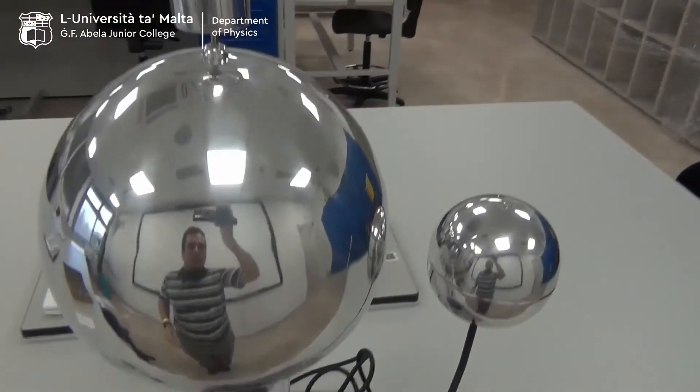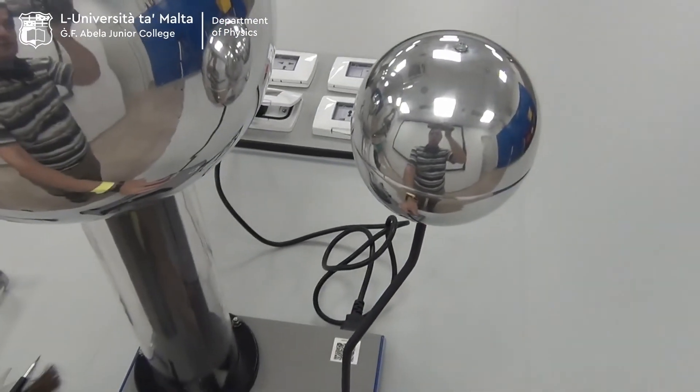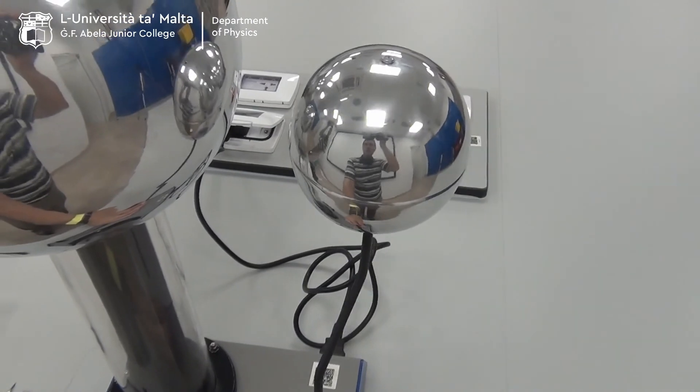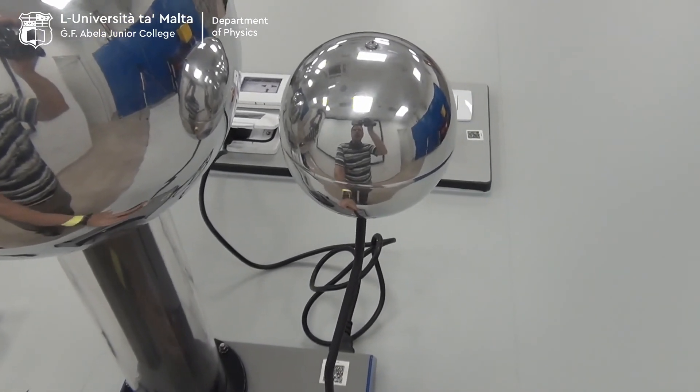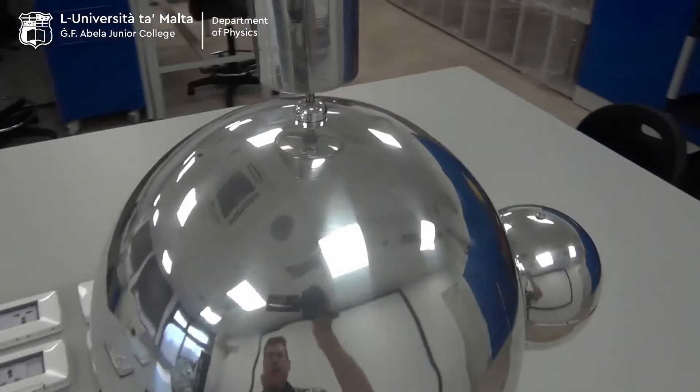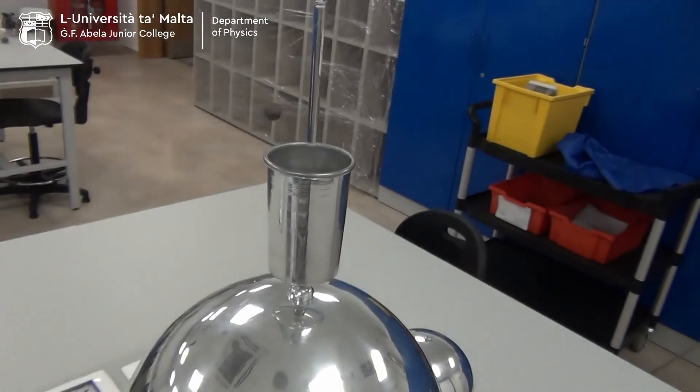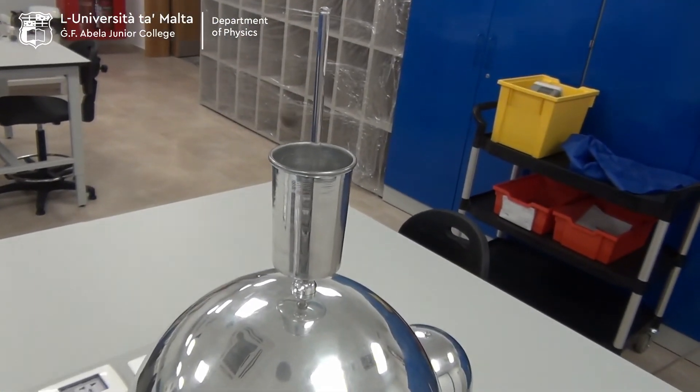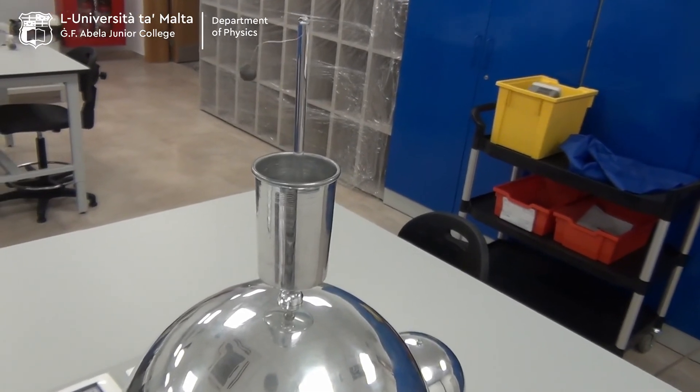Now if we approach the other small sphere close to the large dome, it starts to spark. Since the big sphere loses charge, the ball falls down, charges up, and then falls down as the spark occurs.